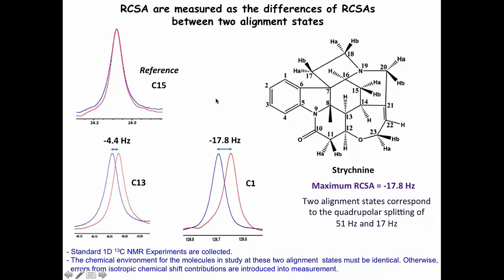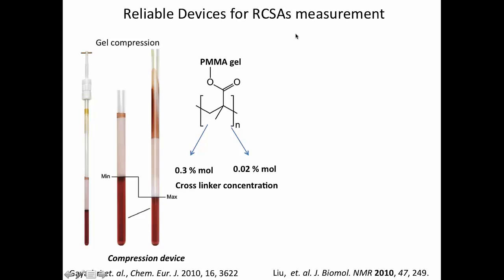So here you can see that, for example, carbon 15 is the least anisotropic carbon. And then you can use that one as a reference. But for carbon 13, here you see an RCSA of minus 4.4. For carbon 1, that is aromatic, that is expected, you can see an RCSA of minus 17.4. So this is done between two compression degrees, 17 Hz and 51 Hz of quadrupolar coupling. But as you can see, they are very small. Even the highest is very small. So you have to be careful. You have to measure these in good condition. You have to have good shimming. And you have to have good resolution. So normally what I do is I take the carbon with 64K and long acquisition time.